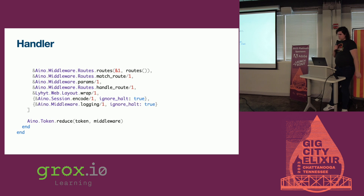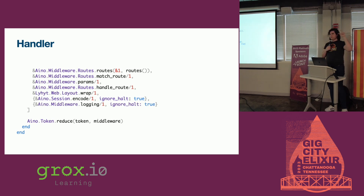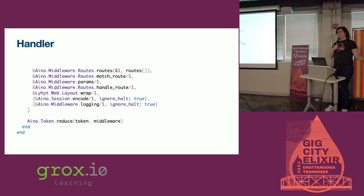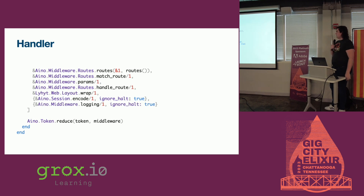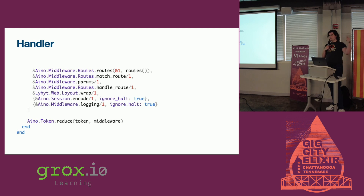Those two look a little special because at any point in time in the chain, you can put halt true in the token and then Inu will stop — unless it gets to this ignore halt true. The real work happens in that Inu token reduce — it just reduces over with that halt true kind of check, and that's about it.